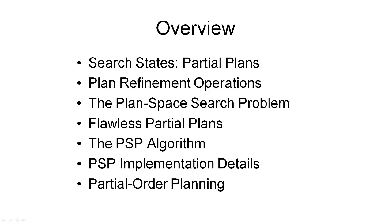This concludes the segment on plan space search. In this approach, we introduced a new search space in which search nodes are partial plans and steps in our search space are plan refinement operations — completely different from state space search, requiring a new initial state and goal test. In our PSP algorithm we searched for a plan with no flaws, where a flaw can be either an unachieved sub-goal or a thread. Finally, we looked at a refinement of this generic algorithm implemented in the UCPOP planner, where the only flaws considered were unachieved sub-goals and threads were dealt with as part of the node generation process.